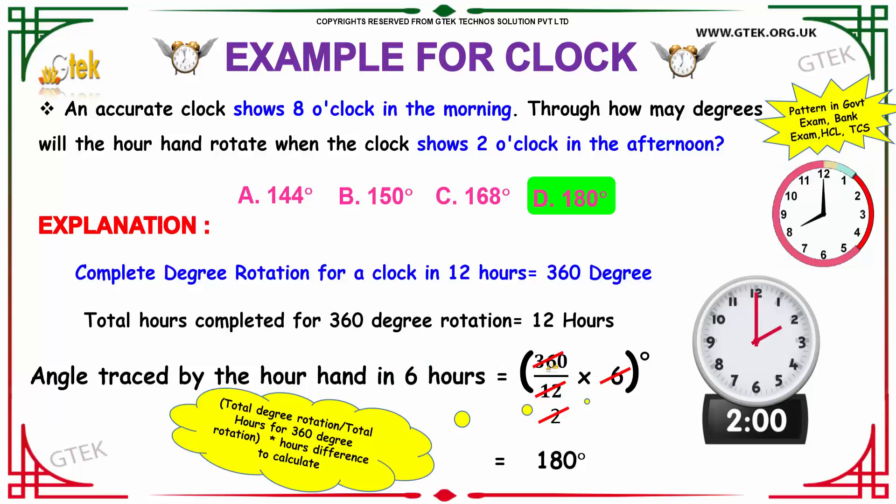Total degree of rotation, that is 360, divided by total hours for 360 degree rotation, that is 12, multiplied by hours of difference to calculate, that is 6. Calculating the values, you get your answer as 180 degrees, that is option D.